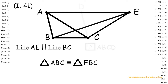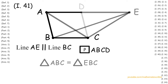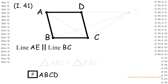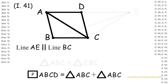Next, looking at parallelogram ABCD and the diameter AC, by Proposition 34, the diameter bisects the parallelogram such that parallelogram ABCD is congruent to triangle ABC plus triangle ABC.